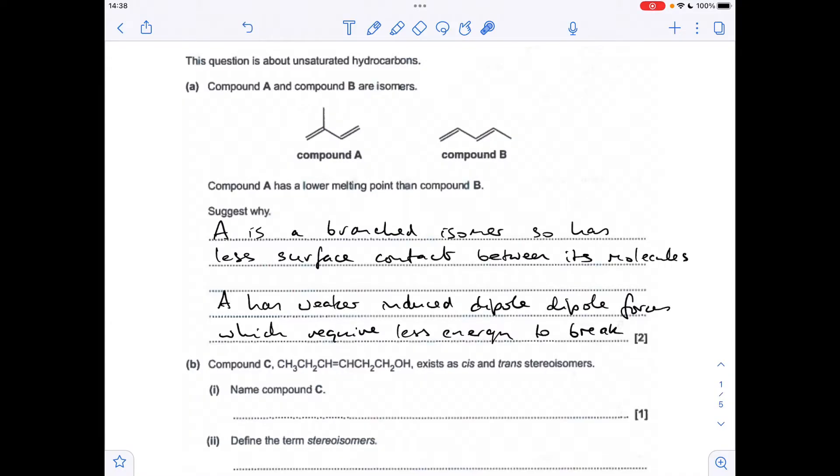Because A is branched, it's got less surface contact between its molecules. They can't get as close together, basically. And because of that, it's got weaker induced dipole-dipole forces between the molecules, or you could say London forces there. And obviously, if they're weaker, less energy is needed to break them.